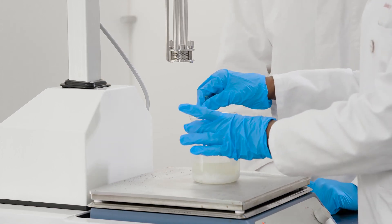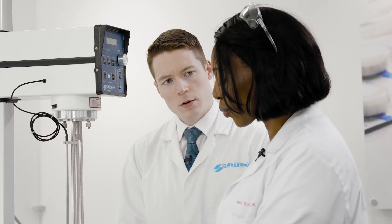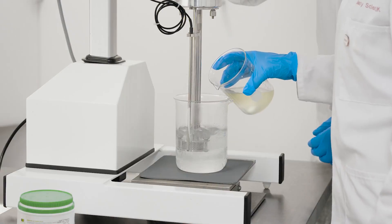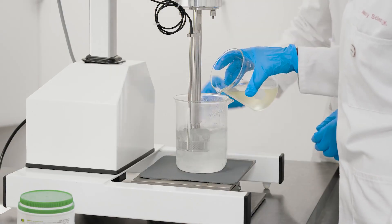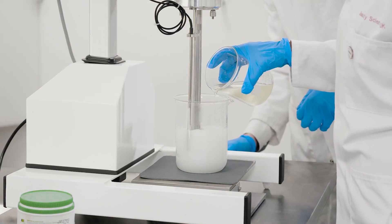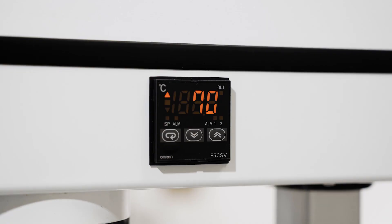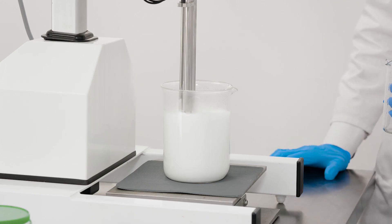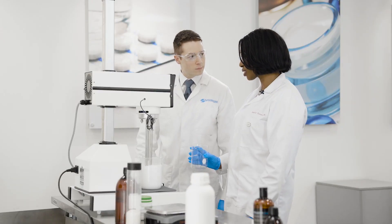So once the oil phase has completely melted and all the waxes have dissolved, we're now in a position to add the oil phase to our water phase which has also been heated to 70 degrees. And immediately that emulsion is forming. As the temperature goes down, we'll start to see the viscosity build.